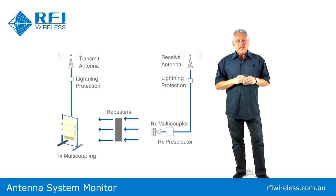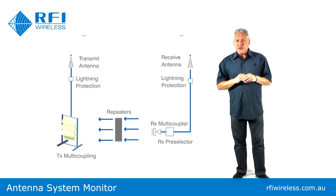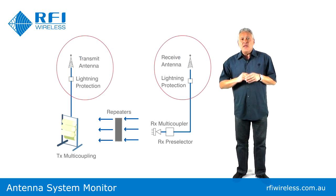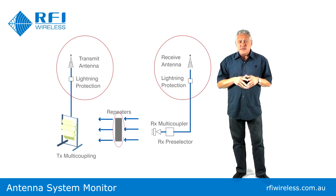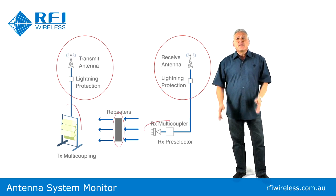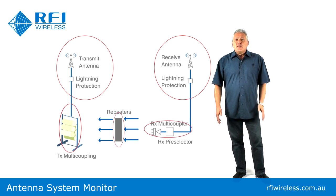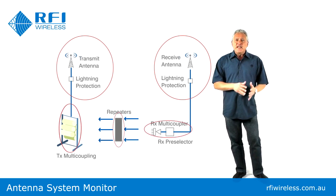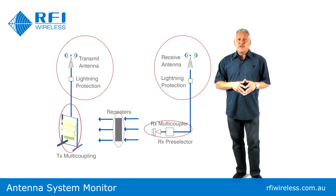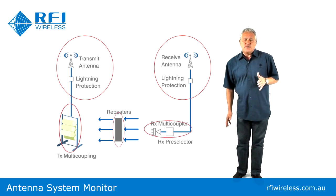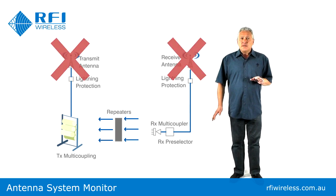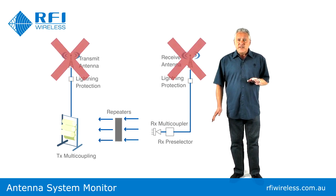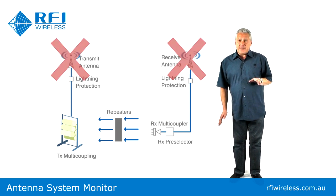Failures in a network typically occur in the antenna system, base station transceivers, or in the multi-coupling network. The failure of an antenna system will have dire consequences since not one, but all channels on that antenna in the network will be affected.